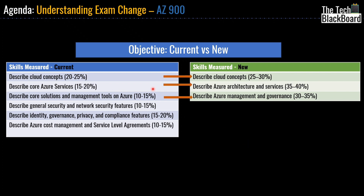The first three categories are one-to-one mapped. Cloud Concepts is again Cloud Concepts, however the percentage has been increased from 20–25% to now 25–30%. Similarly, Core Azure Services will be changed to Describe Azure Architecture and Services. Then we have Core Solutions and Management Tools on Azure, which will be mapped to Describe Azure Management and Governance. Please note the percentages of all these categories have been increased.